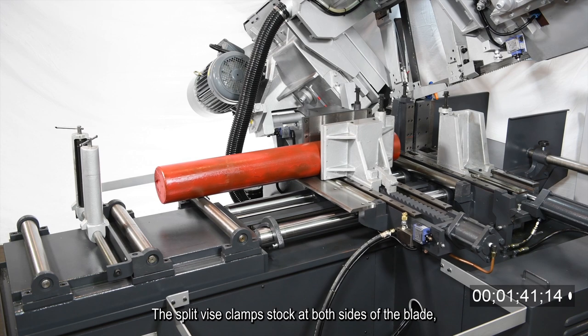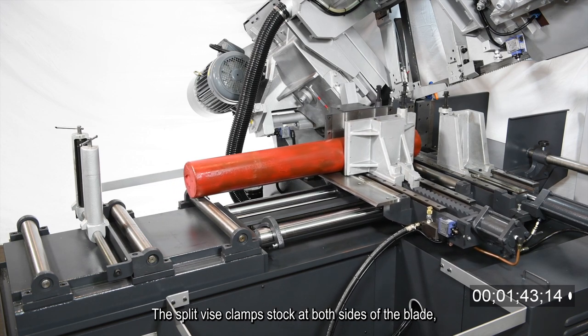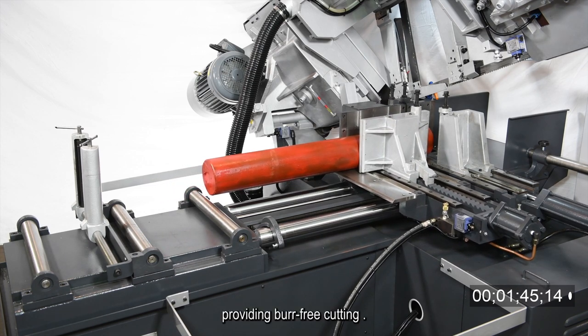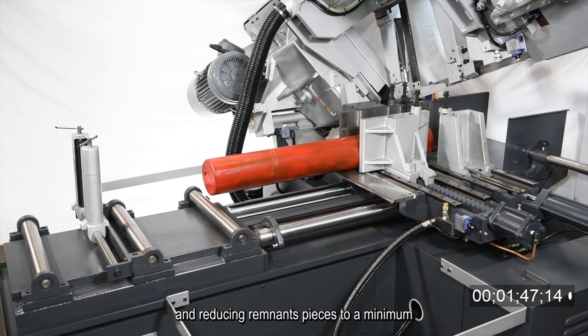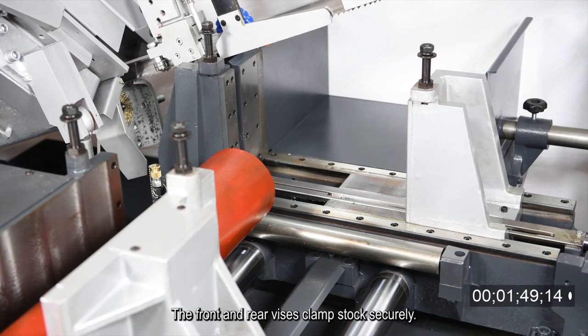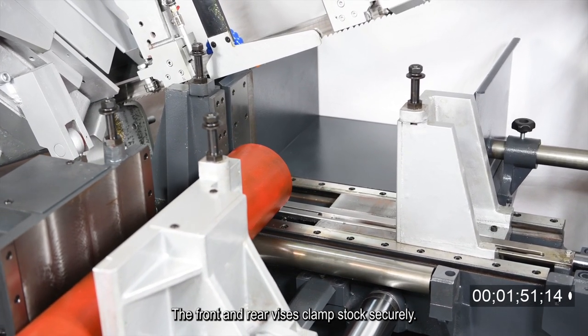The split vise clamps stock at both sides of the blade providing burr-free cutting and reducing remnant pieces to a minimum. The front and rear vices clamp stock securely.